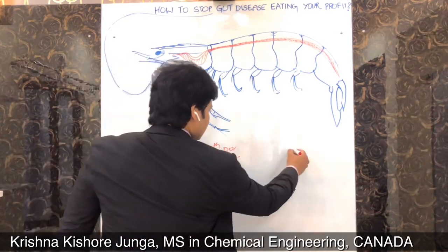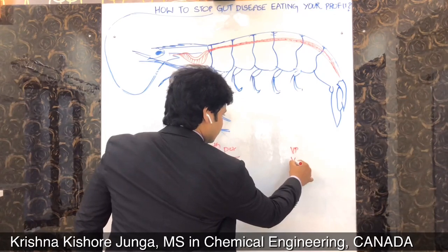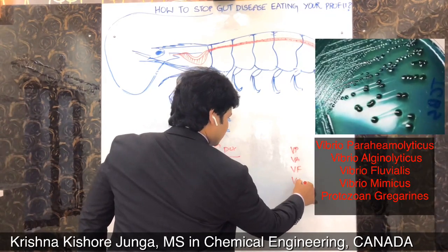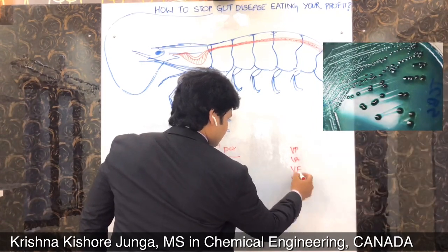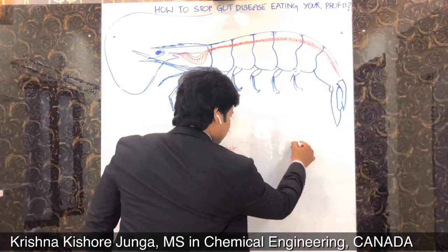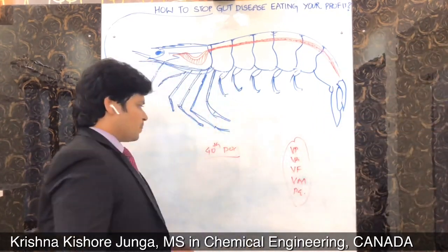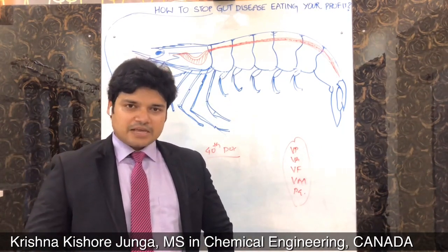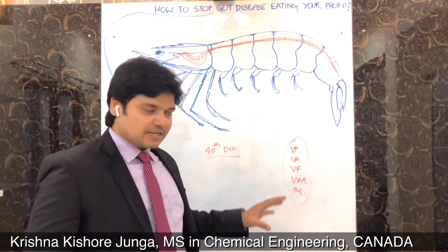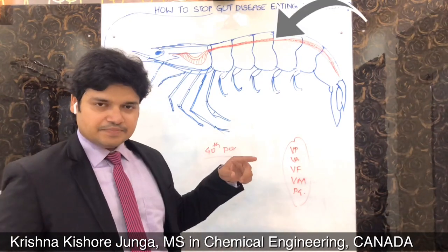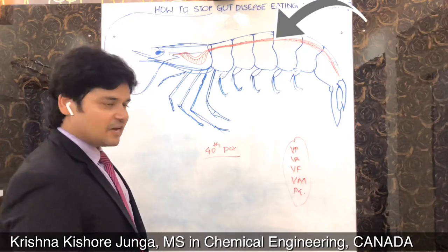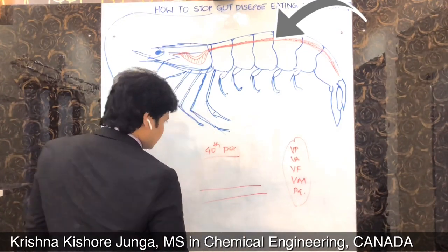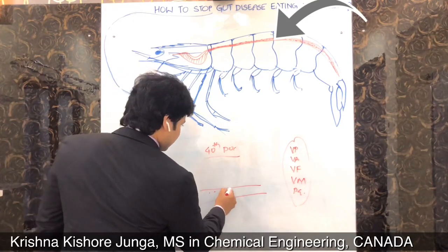Mainly the deadly Vibrio pathogens like Vibrio parahemolyticus, Vibrio alginolyticus, Vibrio fluvialis, Vibrio mimicus, and the protozoan gregarines — these five are forming in the pond bottom and pond media. These pathogenic bacteria slowly enter into the gut.